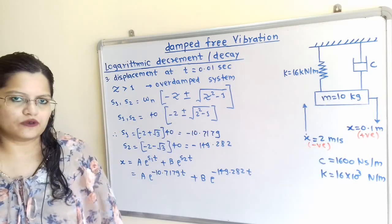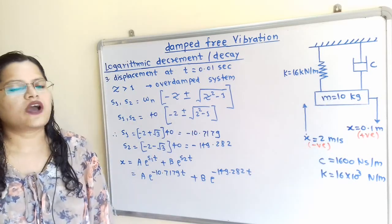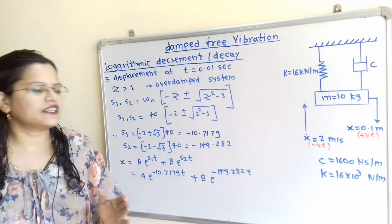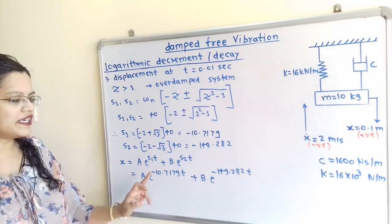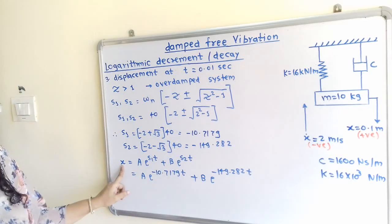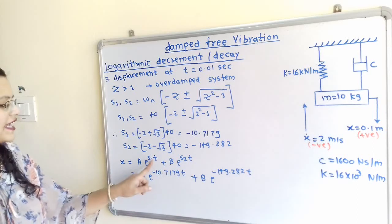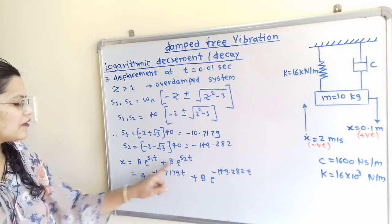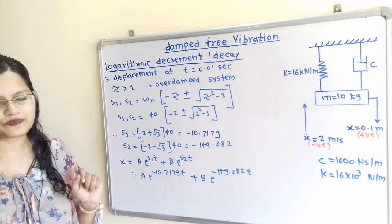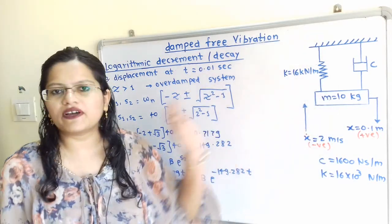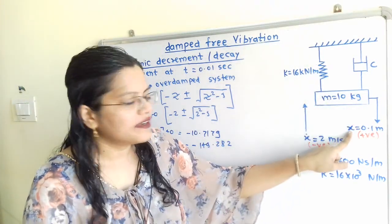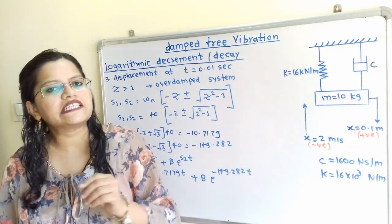So we get these two values: S1 and S2. Now what is the equation of motion? The equation of motion in terms of S1 and S2 is: x = A·e^(S1·t) + B·e^(S2·t). We can find the value of x at any time t since the equation is in terms of constants A, B, and known values S1, S2, and time t. From the given conditions, the mass is initially displaced at x equal to 0.1 meter.